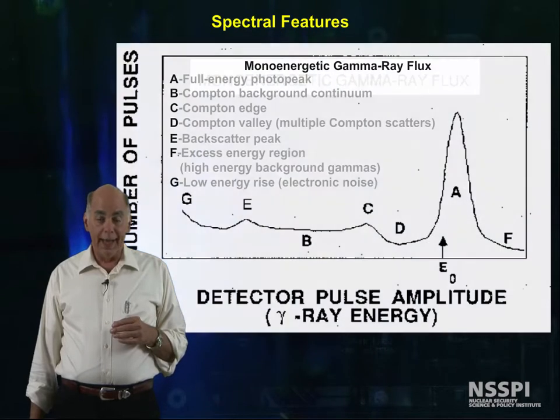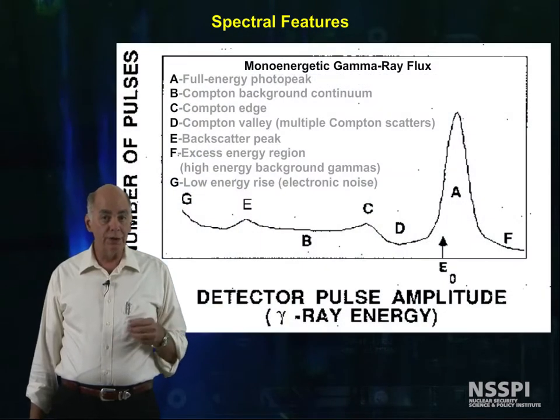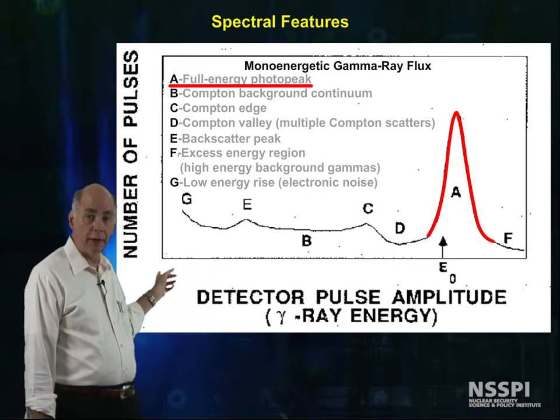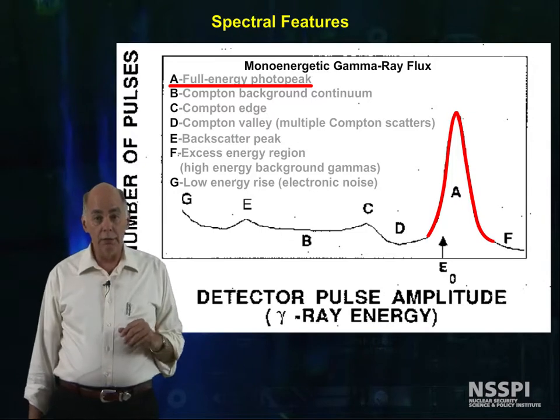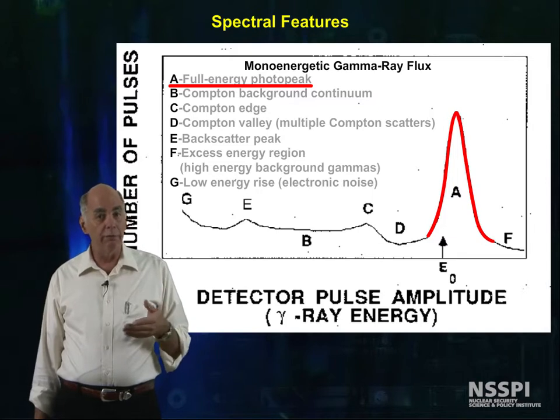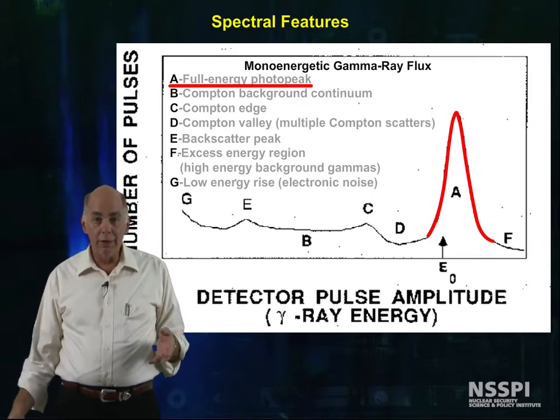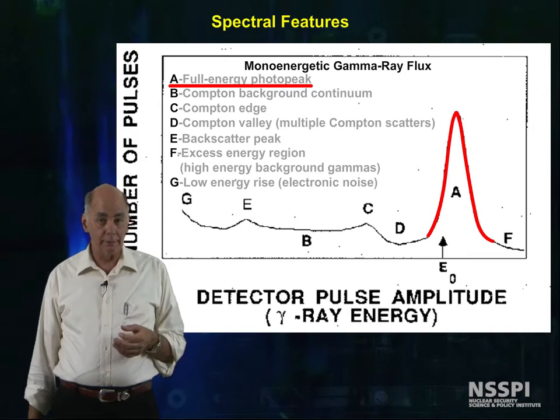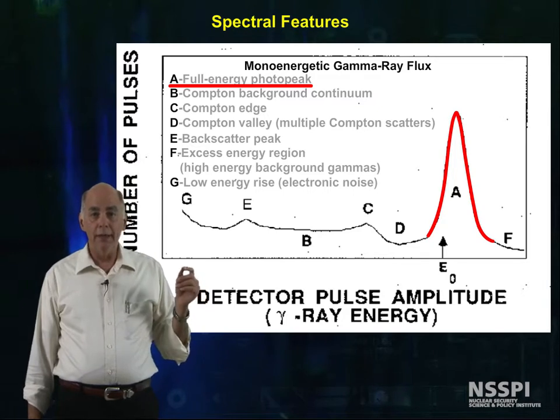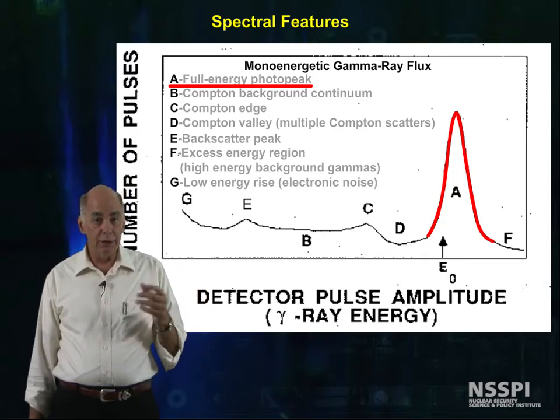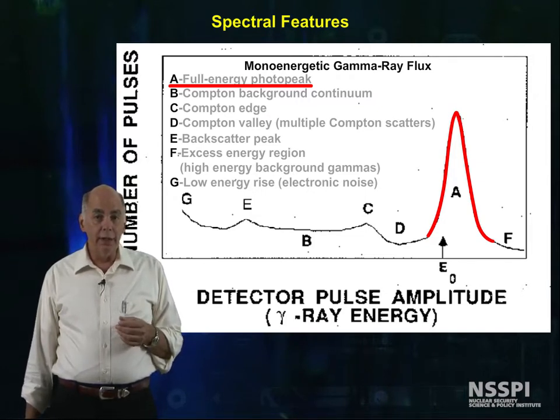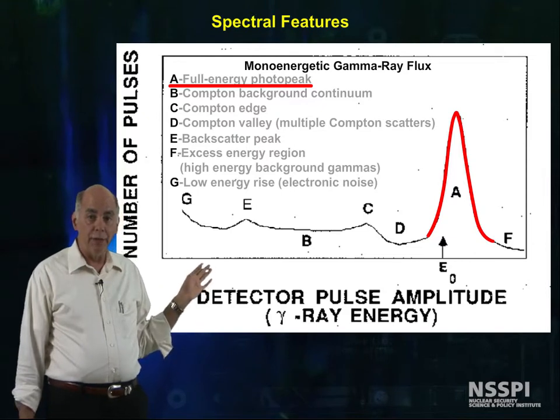Let's look at an actual gamma spectral and look at the spectral features one by one. This is the full energy photo peak, and there are several ways we can get this. One way is that we can have a simple photoelectric interaction and capture all the kinetic energy from the photoelectron. Another way is that we could have a Compton scatter, and the photon coming from the Compton scatter is captured by a photoelectric event in the detector. All this happens so quickly that the energy shows up in the photo peak.